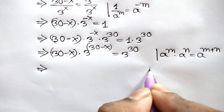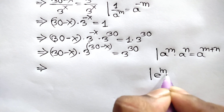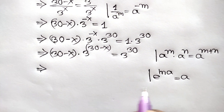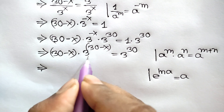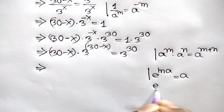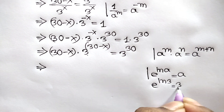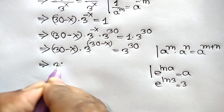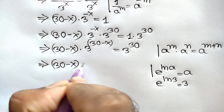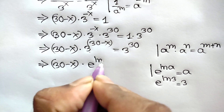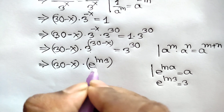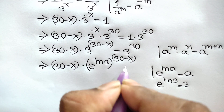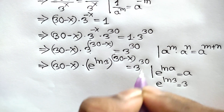Now, if we apply the formula e to the power ln of a is equal to a, putting a equal to 3, we get e to the power ln of 3 is equal to 3. So we can write: 30 minus x times e to the power ln of 3, to the power 30 minus x, is equal to 3 to the power 30.